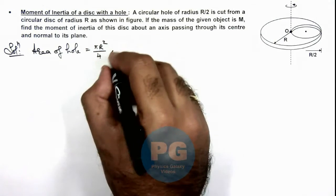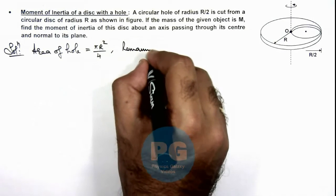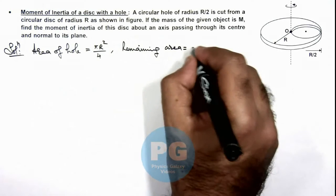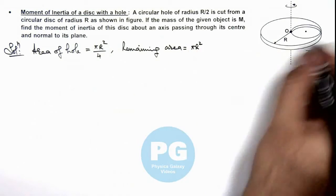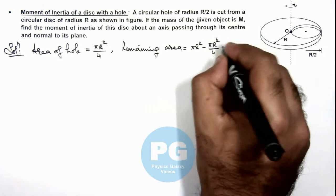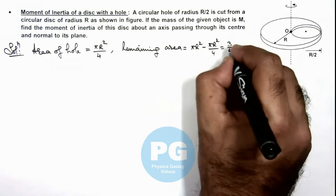And the remaining area will be πR², which is the area of the complete circle, minus πR²/4, that is (3/4)πR².